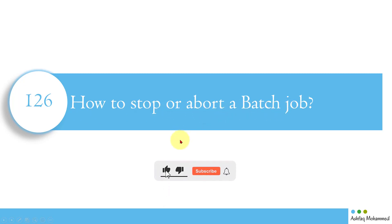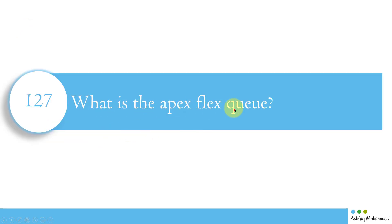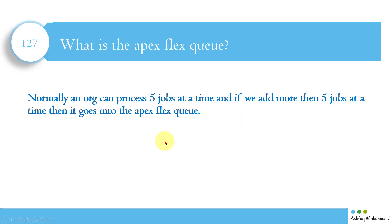The next question is: how do you stop or abort a batch job? If a batch is running and you want to stop it — maybe due to an enhancement or because the batch is no longer needed — you get the ID of the batch job by running a SOQL query on AsyncApexJob, and then use System.abortJob(jobId) to abort the job. It's straightforward.